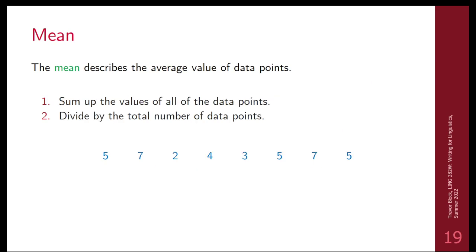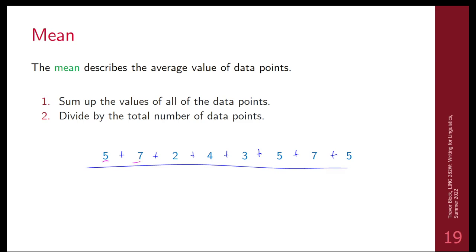The mean is just the average. You add up all your values together and divide by the number of values you have. If you're doing a reading time experiment with 40 sentences and 30 participants, you have thousands of data points — so a computer does this automatically. As a demo, we would add up all of these numbers and then divide by the total number of items.